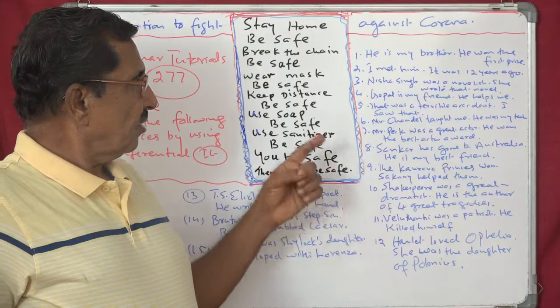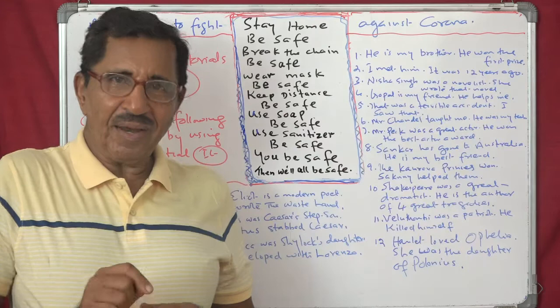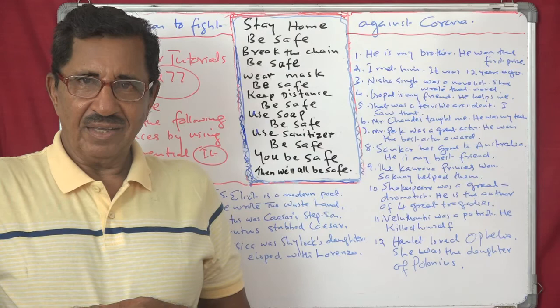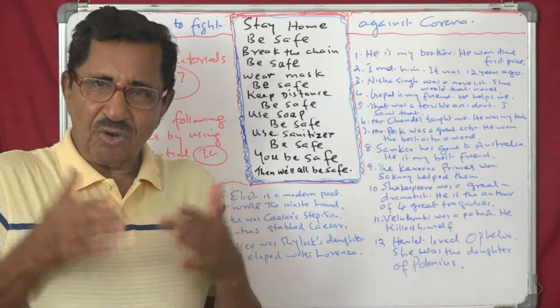Fourth one — Gopal. 'Gopal is my friend. He helps me.' This becomes: 'It is Gopal, who is my friend, who helps me.' Or simply: 'It is Gopal, my friend, who helps me.'